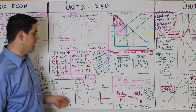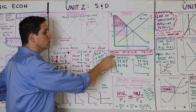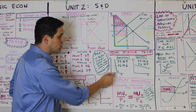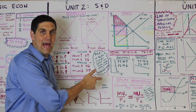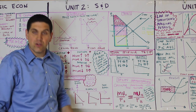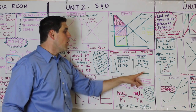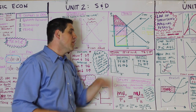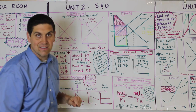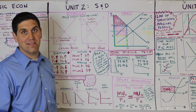You can find elasticity using the total revenue test. If the price goes up and total revenue also goes up, that's inelastic demand — it looks like an 'I': price up, total revenue up. If the price goes up and total revenue falls, quantity fell by a lot, so the box got smaller — that must be elastic demand. If price goes up and total revenue stays the same, that's unit elastic demand.